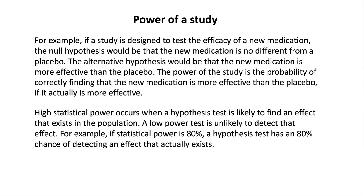For example, if a study is designed to test the efficacy of a new medication, the null hypothesis would be that the new medication is no different from a placebo. The alternative hypothesis would be that the new medication is more effective than the placebo. The power of the study is the probability of correctly finding that the new medication is more effective than the placebo, if it actually is more effective.